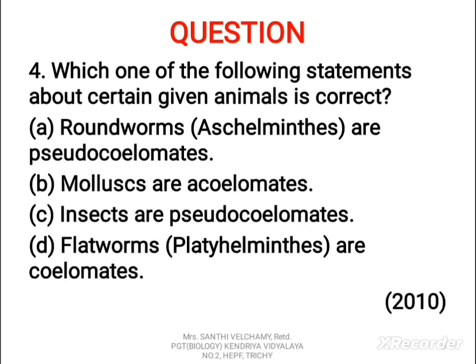Fourth question: which one of the following statements about certain given animals is correct? A) Roundworms — that is Aschelminthes — are pseudocoelomates. B) Molluscs are acoelomates. C) Insects are pseudocoelomates. D) Flatworms are pseudocoelomates. The correct answer is A — Roundworms are pseudocoelomates. In pseudocoelomates, the body space is called pseudocoelom or false coelom. Example for this is Aschelminthes, so roundworms come under Aschelminthes.